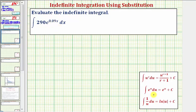So to begin, we'll let u be equal to the exponent of 0.09x. Next we need to find du, which is equal to the derivative of 0.09x with respect to x, times dx. So we'd have du equals 0.09 times dx.